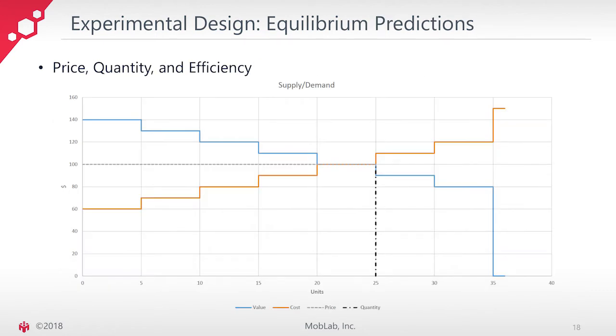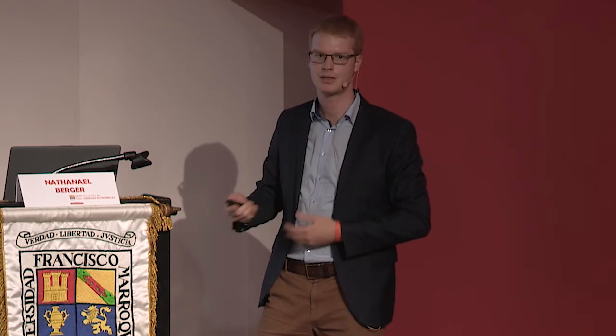Participants didn't know all the aggregate information — they only saw their personal private values or, if sellers, their personal private costs. Then we told them to trade with their classmates. There was also an exchange rate so earnings made in the experiment were later rewarded in US dollars. On average, students made $20 per session. We incentivized students so that the better they traded, the more they would be paid out at the end — that's common practice in experimental economics.